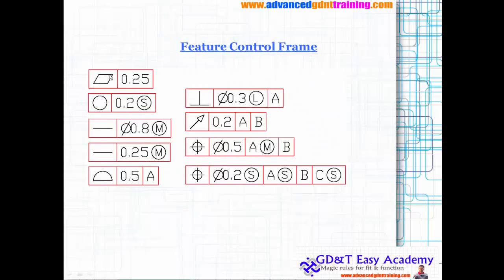These are the different ways of presenting the flatness 0.25, the roundness and cylindricity you can use. You can see this is the RFS. Here the straightness is used with the modifier.